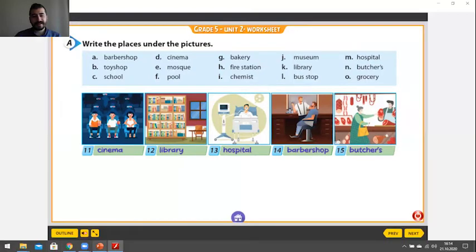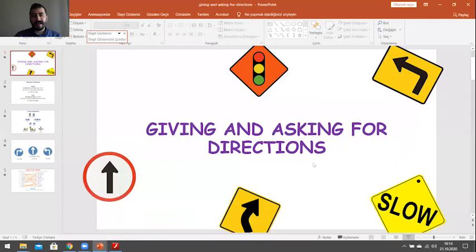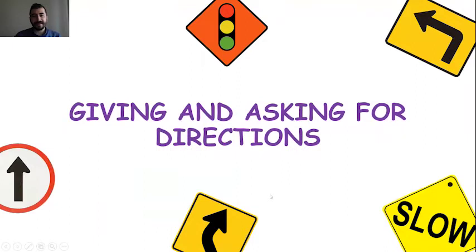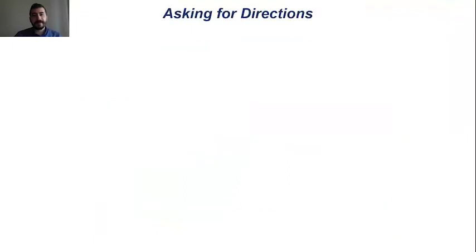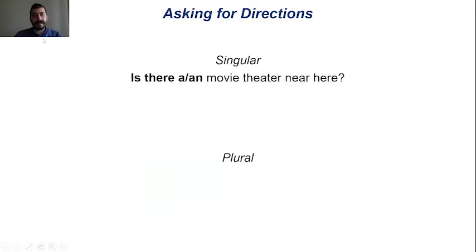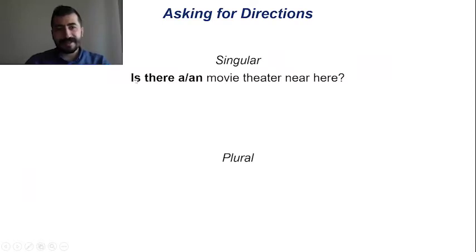Now let's practice some giving and asking for directions. We can ask a singular or plural question. What is singular? Only one. Plural — more than one, two, three, four. Let's see examples. When we ask a singular question: Is there a movie theater near here? Movie theater means cinema. Is there a cinema near here?